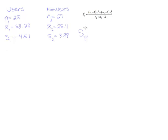So sp squared will be equal to n1 minus 1. To keep it simple, let's just do that arithmetic in our head. That'll be 27 here, times s1 squared. Here's our s1. We need to square it. So we'll have 4.51 squared.